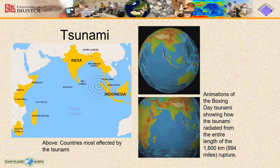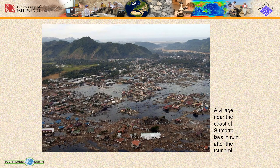Although this usage is not favored by the scientific community because it might give the false impression of a casual relationship between tides and tsunamis. Now we can see on the globe the animations of the Boxing Day tsunami, showing how the tsunami radiated from the entire length of the 1,600 kilometer — that is 994 miles — rupture. Here we can see a village near the coast of Sumatra which lies in ruin after the tsunami.